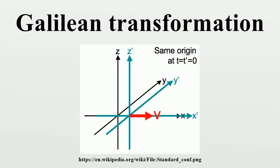These transformations together with spatial rotations and translations in space and time form the inhomogeneous Galilean group. Without the translations in space and time the group is the homogeneous Galilean group.